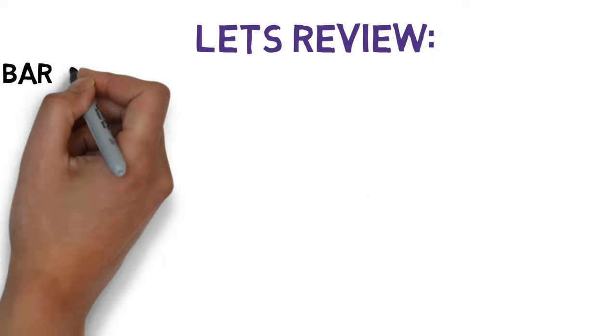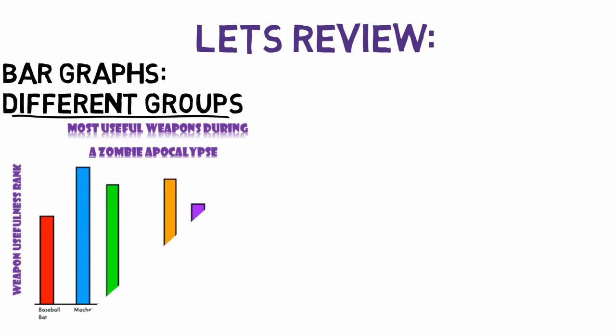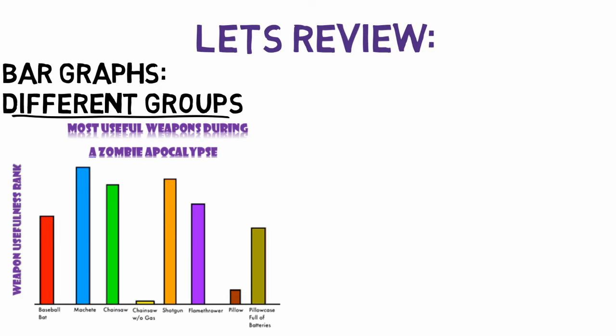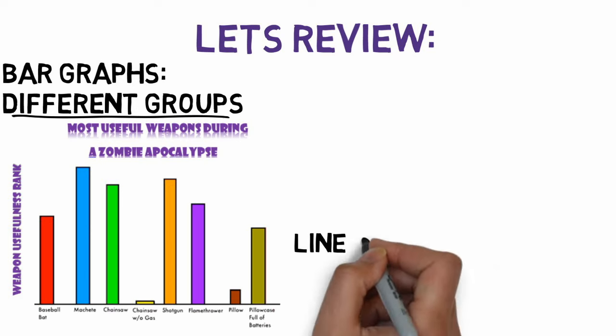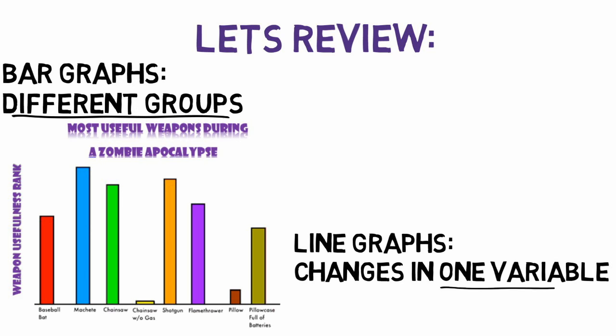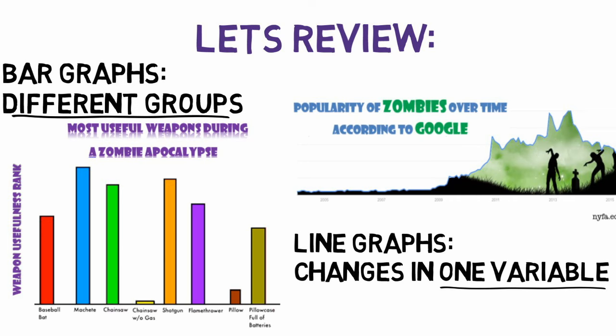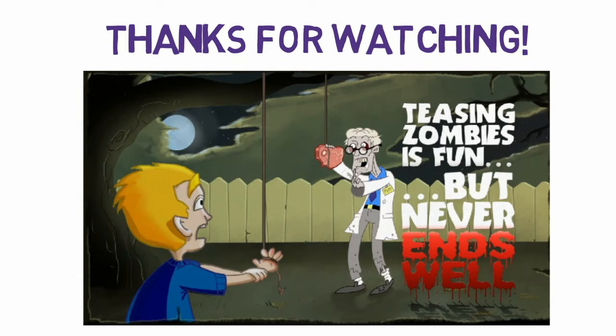So let's review. You use bar graphs when you have different groups or unique categories to put on a graph. On the other hand, you use line graphs when you want to show changes in one variable that has been divided up. And remember, teasing zombies is fun, but it never ends well.